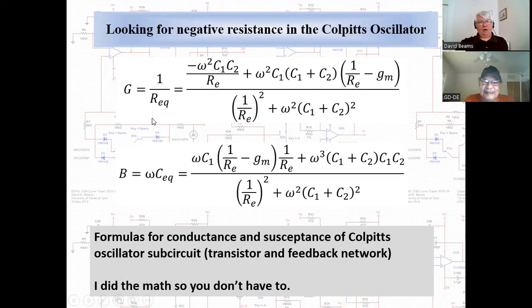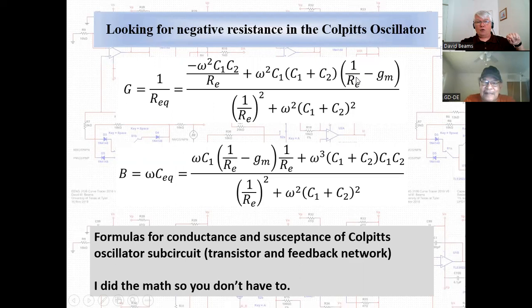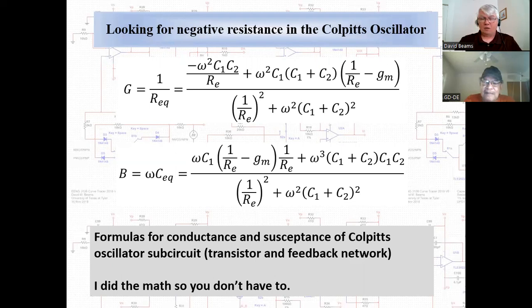I worked out the conductance and susceptance of the Colpitts oscillator — the transistor and the feedback network. One thing to point out: 1/re and gm are very close to each other, so that term is usually close to zero. What's left is a negative term producing a negative conductance. When the 1/re term is relatively small compared to the other, the susceptance becomes that of two capacitors in series — a simple formula to figure out the oscillation frequency. And there's that negative resistance again as a criterion to determine when the Colpitts works.